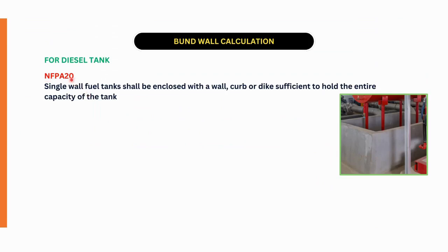NFPA 20 has only one statement related to the bund walls. As per NFPA 20, single wall fuel tanks shall be enclosed with a wall, curb, or dike tank sufficient to hold the entire capacity of the tank. You can observe the diagram showing the wall surrounding the diesel tank. According to NFPA 20, single wall fuel tanks must have these walls surrounding them.